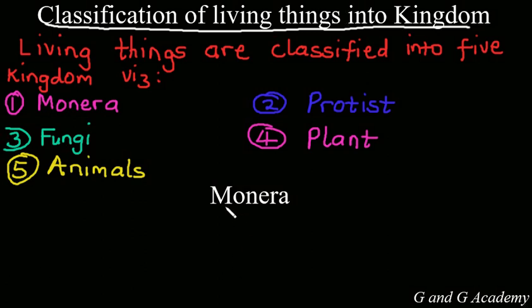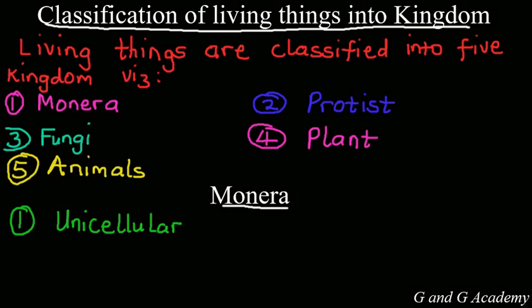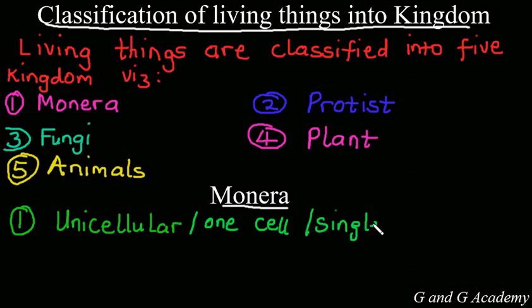Let's talk on the Moneras. Like I said, it is the simplest and it is unicellular, which means that it only has one cell — a single cell. And it's a typical prokaryote.